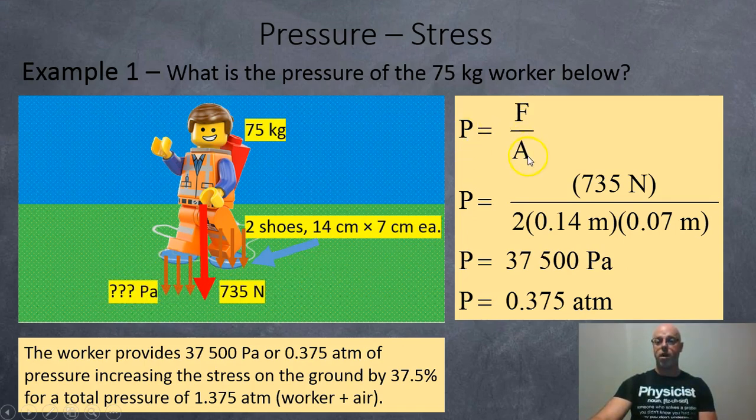So we're going to use our formula, pressure's force over area, and that is 735 newtons divided by the two shoes, each shoe being 0.14 meters by 0.007 meters. And all together, the pressure works out to be 37,500 pascals.